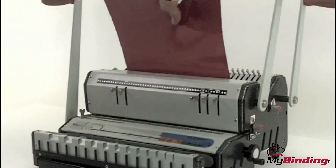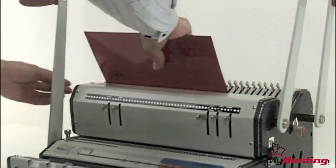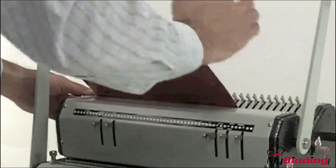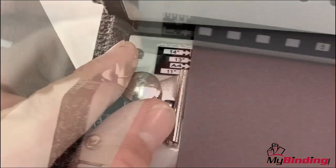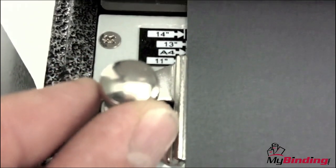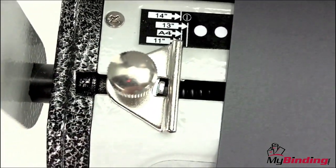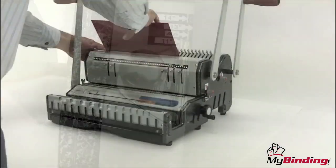Every wire binding machine will have a punch where you punch holes into your project. With the WireMAC, it's here at the top. You slide your papers into the throat of the punch and then you adjust the side margin control knob. Side margin control is simply a way of locking down a setting so that all papers are punched in the same place throughout your entire project.